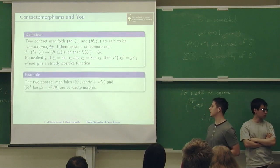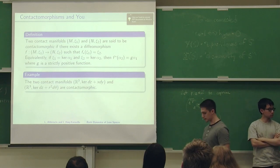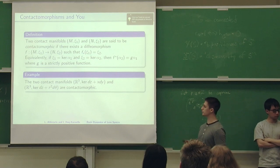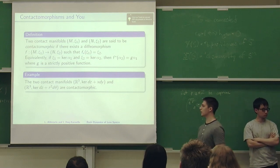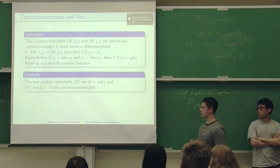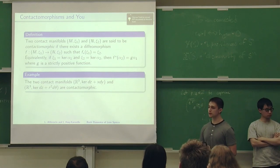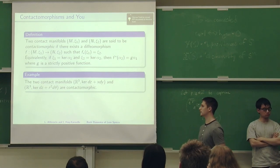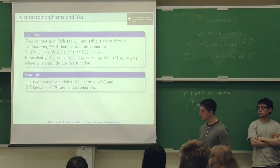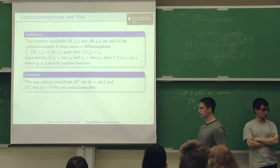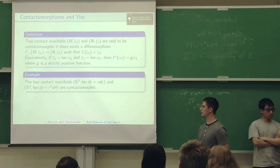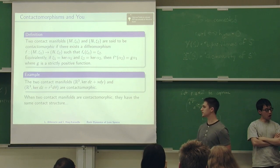Let's look at an example. R3 with the kernel of the one form we showed earlier, and R3 with the kernel of this form are contactomorphic. In fact, these are strictly contactomorphic, which means that not only are the contact structures the same, but these two contact forms are also the same. When we have morphisms like contactomorphisms, obviously one thing we study are invariants under contactomorphisms.